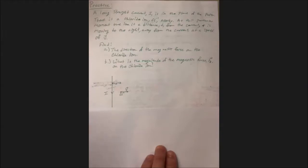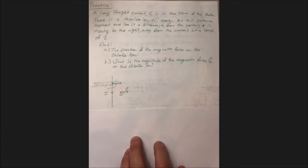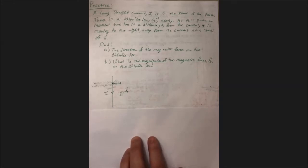Here's another practice question. A long straight current I1 is in the plane of the paper. There is a chloride ion, Cl minus 1, nearby. At this particular moment, the ion is a distance D from the current and is moving to the right away from the current at a speed of V. Find A, the direction of the magnetic force on the chloride ion, and B, the magnitude of the magnetic force F sub B on the chloride ion.